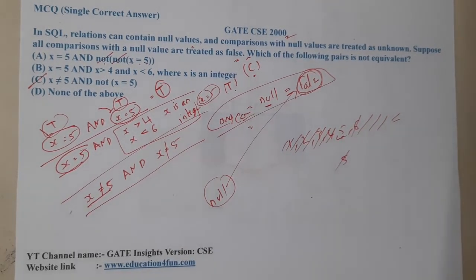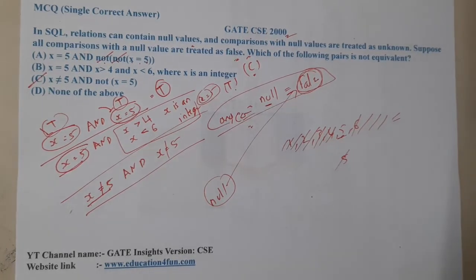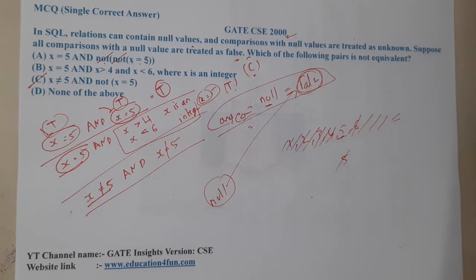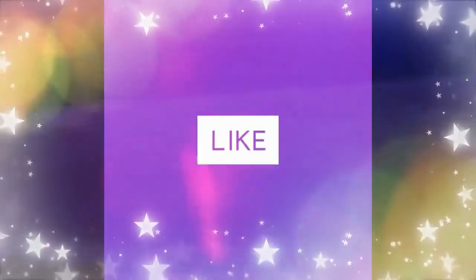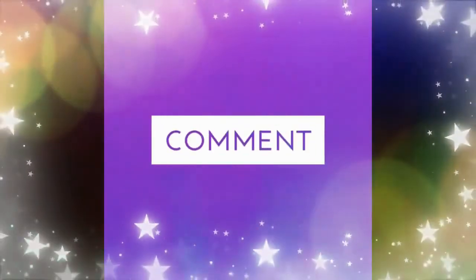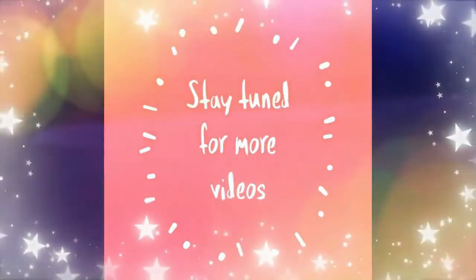This is a quite easy question — the only difficulty was understanding it. The key hint is that any operation with null is false. With that analysis we identified x could be null in option C, making the pairs non-equivalent. I hope everyone got a clear idea. Let us continue with the next question in the next lecture. Thank you, like, share, and subscribe.